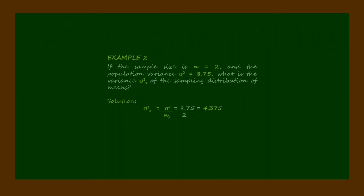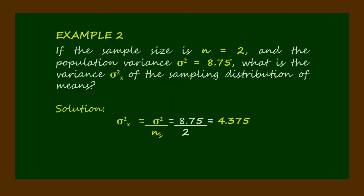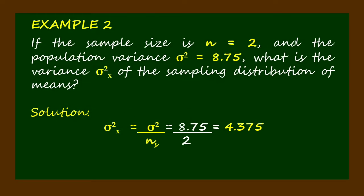Example 2 shows its application. If the sample size is n equals 2 and the population variance sigma squared equals 8.75, what is the variance sigma squared sub x of the sampling distribution of means? Take a look at the preceding solution.